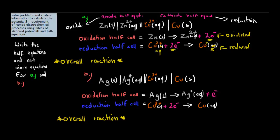For the overall reaction, you don't have to write the actual electrons — you just write: Zn(s) + Cu²⁺(aq) → Zn²⁺(aq) + Cu(s). What happened is zinc gave two electrons to the copper ion: zinc became oxidized — it lost those two electrons — and copper took those two electrons to become reduced. That's your overall reaction, your net ionic equation. These were your half cell equations.